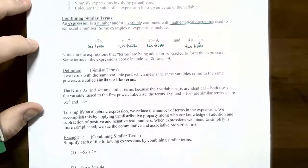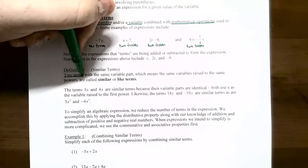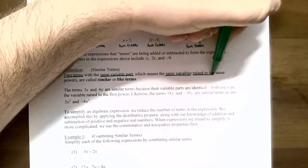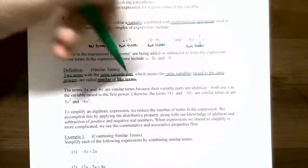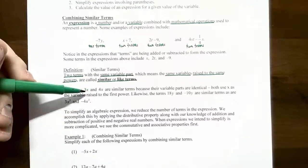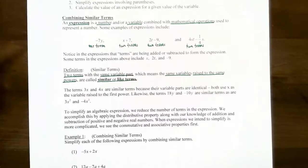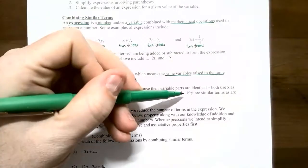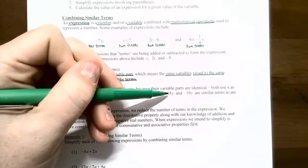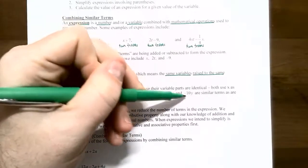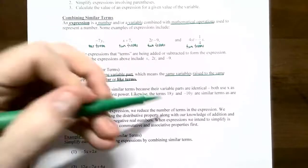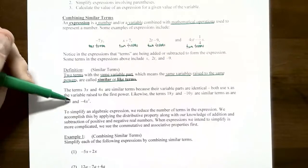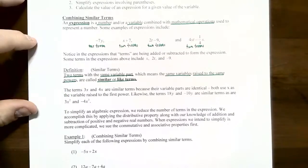Now let's go with the definition of similar or like terms. Two terms with the same variable part — meaning the same variables raised to the same power — are like or similar terms. For example, 3x and 4x are like terms because they both have x raised to the first power. Likewise, 18y and negative 10y are like terms — both have y to the first power. And 3x² and negative 4x² are like terms because they both have x raised to the second power.